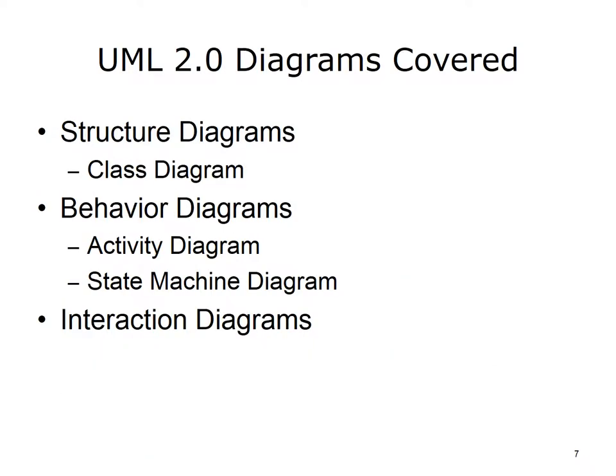The 13 UML diagrams fall into three categories. Structure diagrams, of which there are six types, represent static aspects of system structure. One structure diagram, the UML class diagram, is covered here. Behavior diagrams, of which there are three types, represent dynamic aspects of systems. Of these, two diagrams, the UML activity diagram and the UML state machine diagram, are covered here. Interaction diagrams, of which there are four types, represent detailed behavior. Interaction diagrams are not covered here.